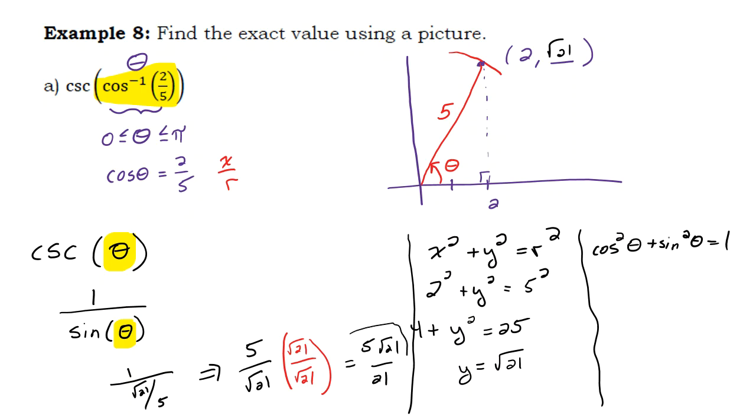All right, let's just see real quick what would happen if we would do it this other way. So we know the cosine. We know the cosine of the angle right here. The cosine is two-fifths. So the cosine squared would be two-fifths squared plus sine squared theta equals one. So then I get sine squared theta equals, two-fifths squared is four-twenty-fifths. So one minus four-twenty-fifths would be 21-twenty-fifths.